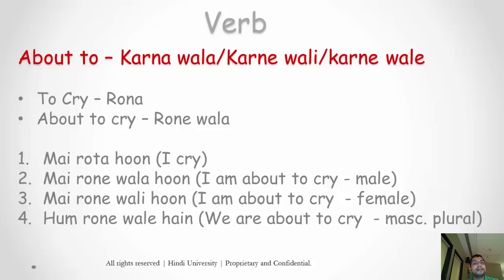Remember we learned 'rona,' and we also learned a keyword called 'wala.' In these sentences you combine both of them. So you will say 'main rone wala hoon' — I'm about to cry — for masculine singular, and 'main rone wali hoon' for feminine singular.